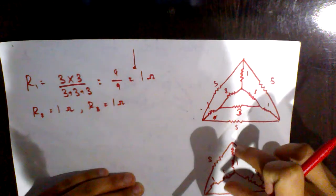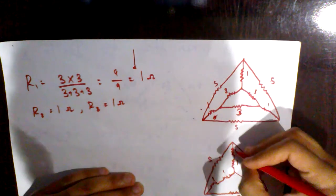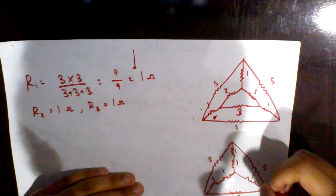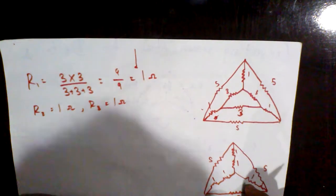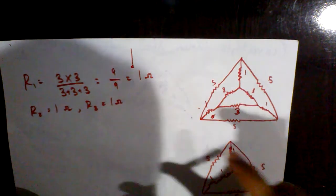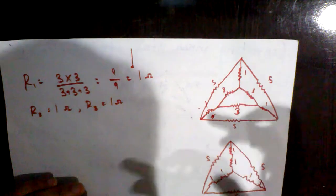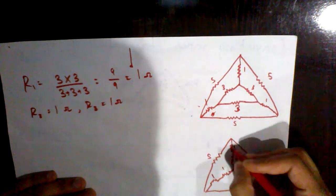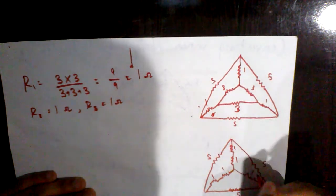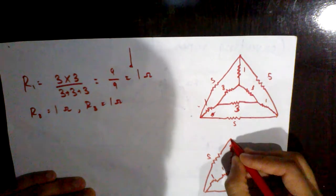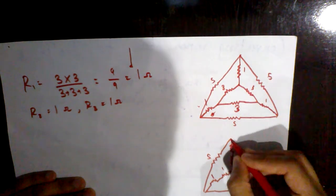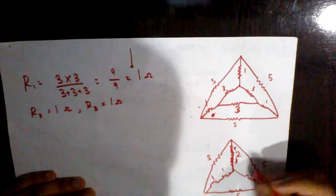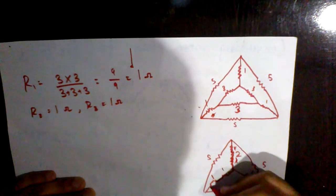When you look at this diagram, you will notice that these 1 ohm resistances are in series. So when you combine the series 1 ohm resistors together, you simplify the inner star network.